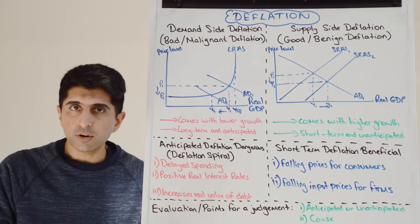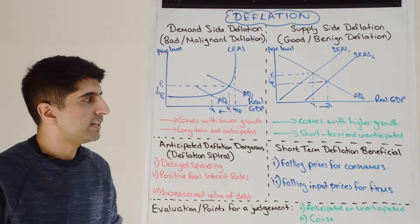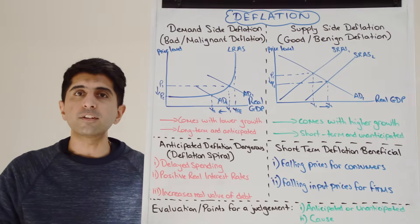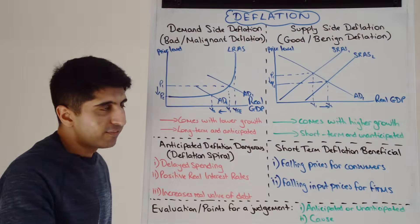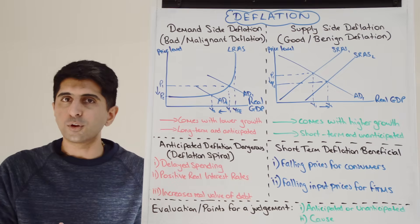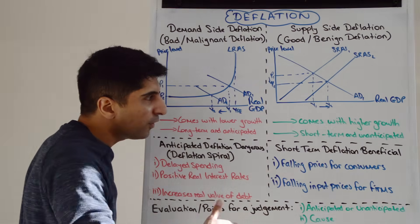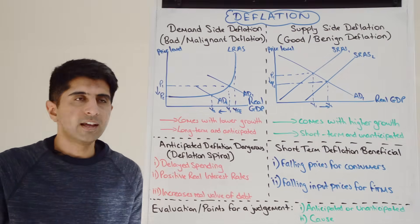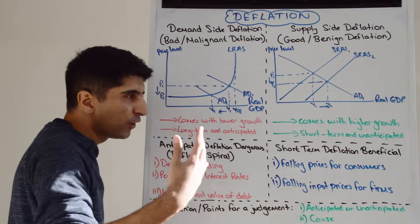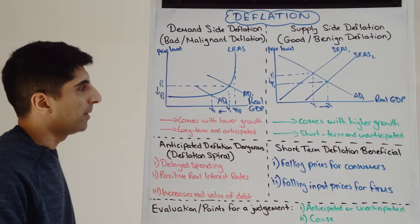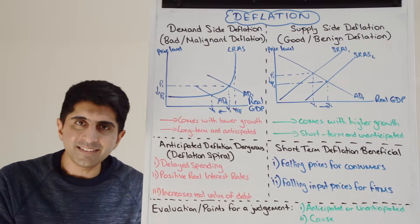Look at some of the reasons why SRAS could shift right: maybe lower raw material prices — but raw material prices might be low today and in a couple of weeks could easily go back up again. Maybe there is a strong exchange rate so the price of imported raw materials has decreased — but exchange rates don't stay strong forever. A lot of those factors won't necessarily last in the long term, and therefore this deflation might not last either. That's why it's seen as better for the economy.